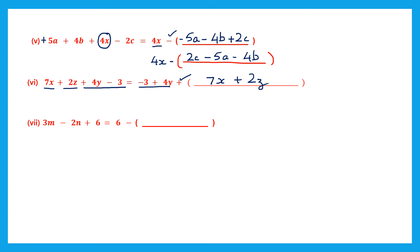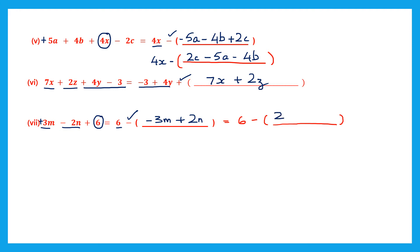Question 7. 3m minus 2n plus 6 on the left hand side. On the right, 6 has been taken. I have to insert plus 3m and minus 2n inside the brackets. The sign before the bracket is minus, so I have to change the sign of the terms inside: plus 3m becomes minus 3m, and minus 2n becomes plus 2n. Rewriting by putting the positive sign first: 2n comes first, then minus 3m. Both orders are correct.